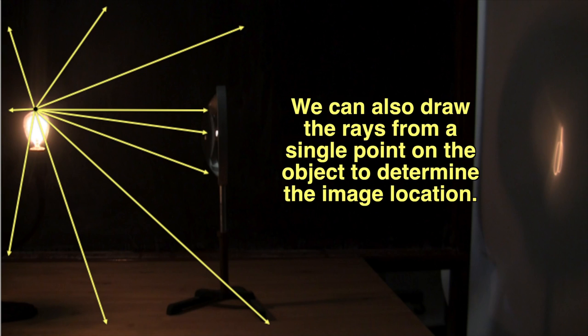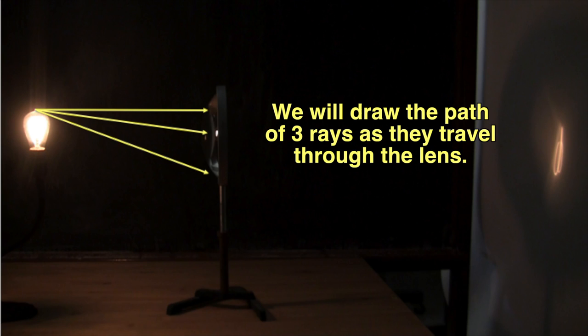We can also determine the location of the image graphically by tracing rays that emerge from a single point on the object. To determine where the image is formed, and thus where we should place the screen, we can draw three easy rays and find where they meet.